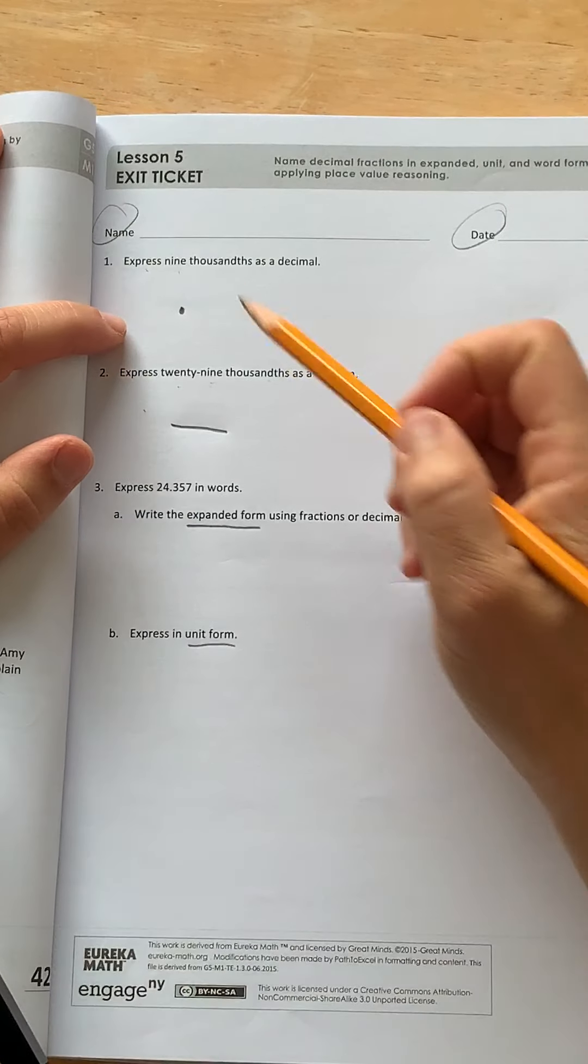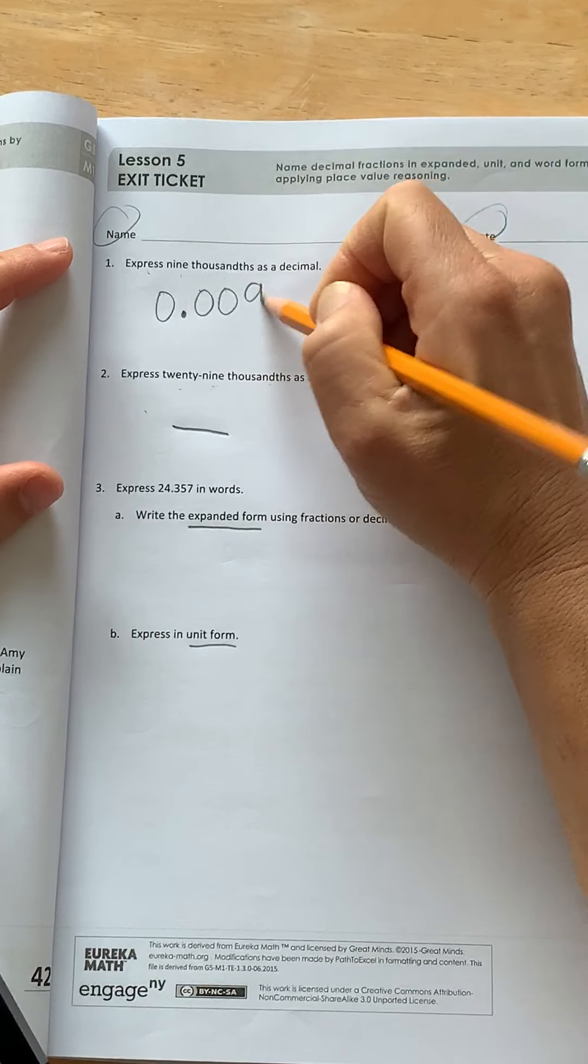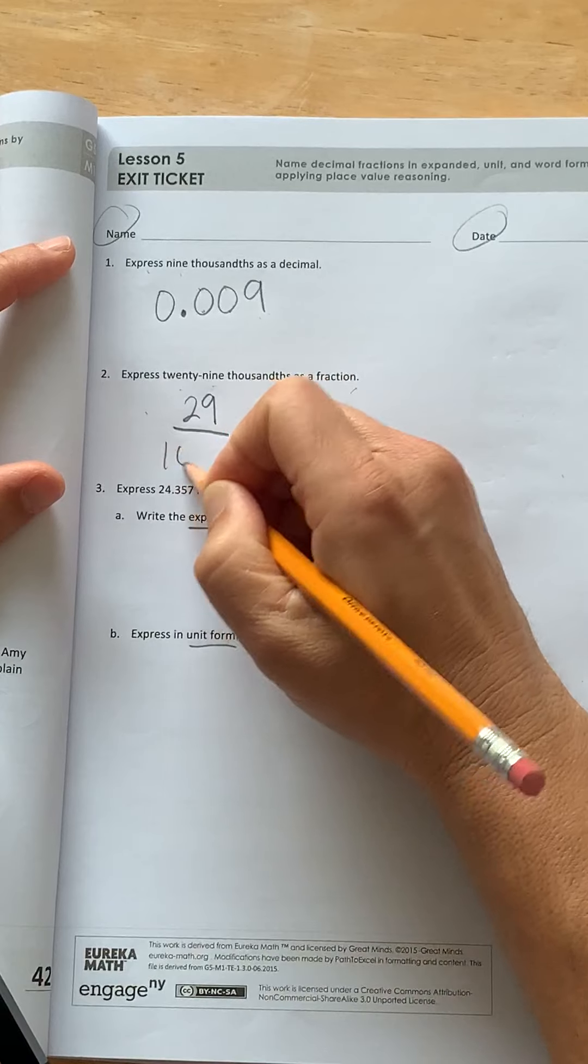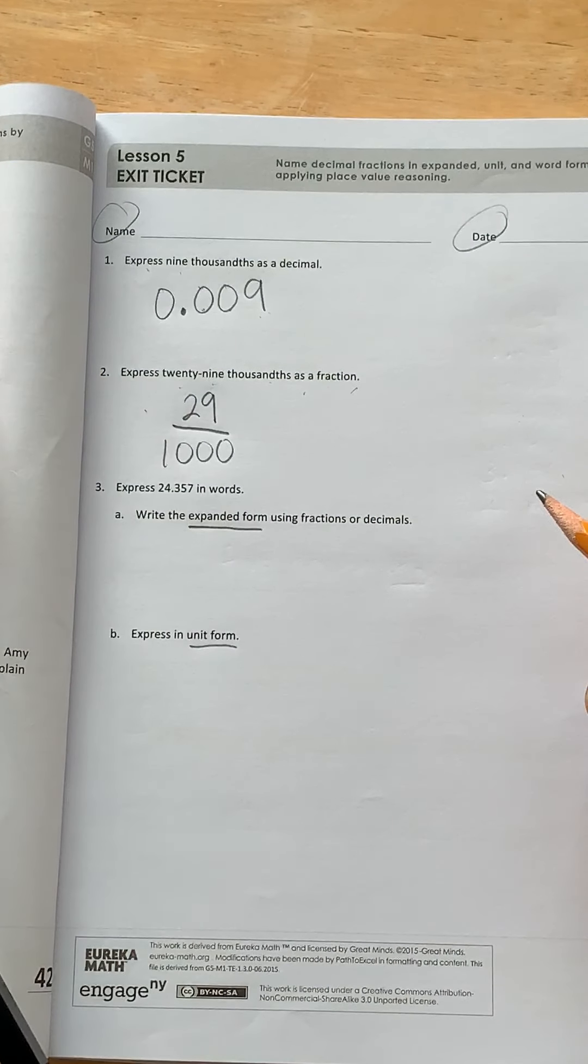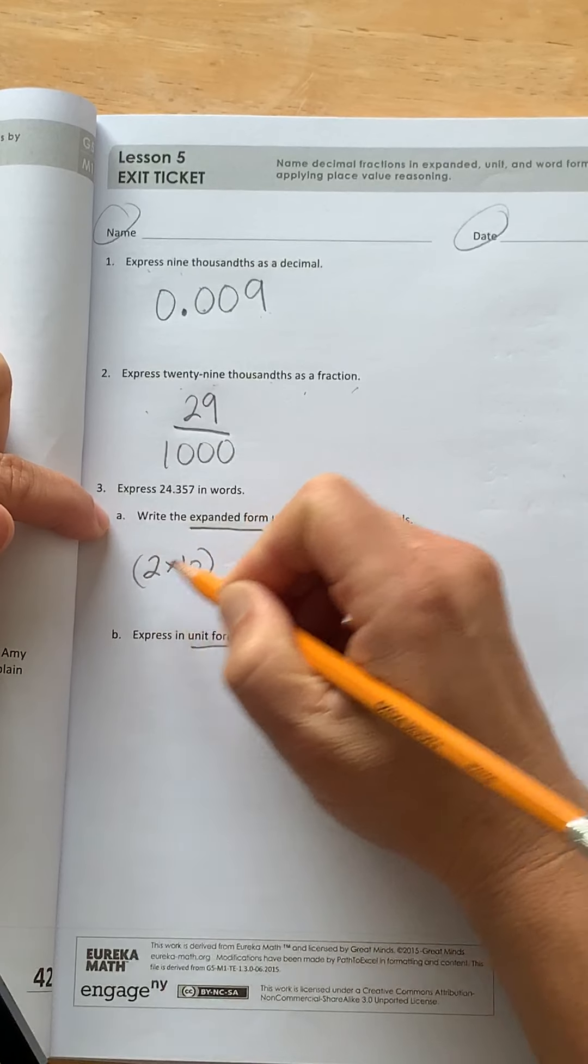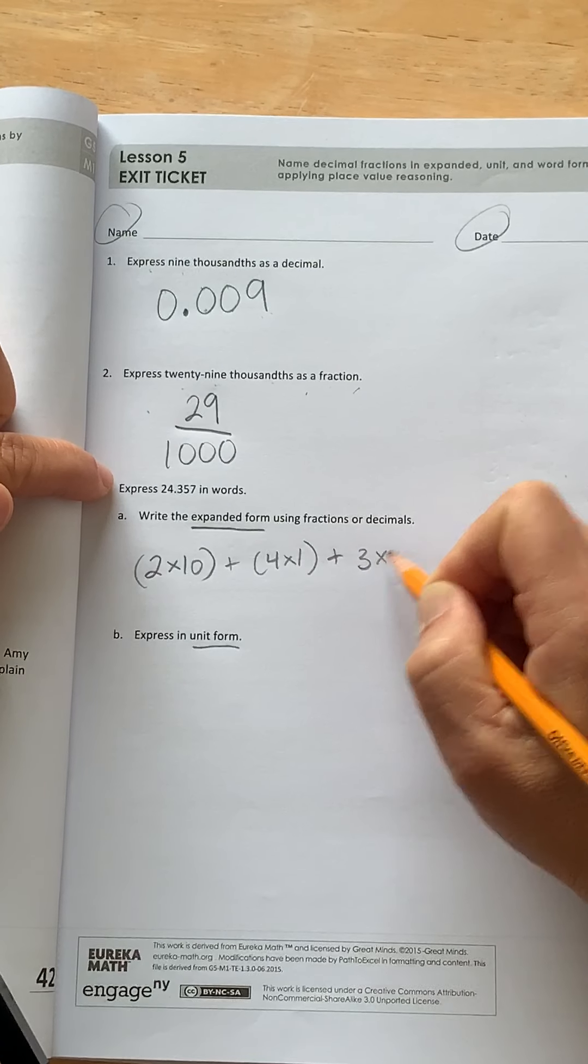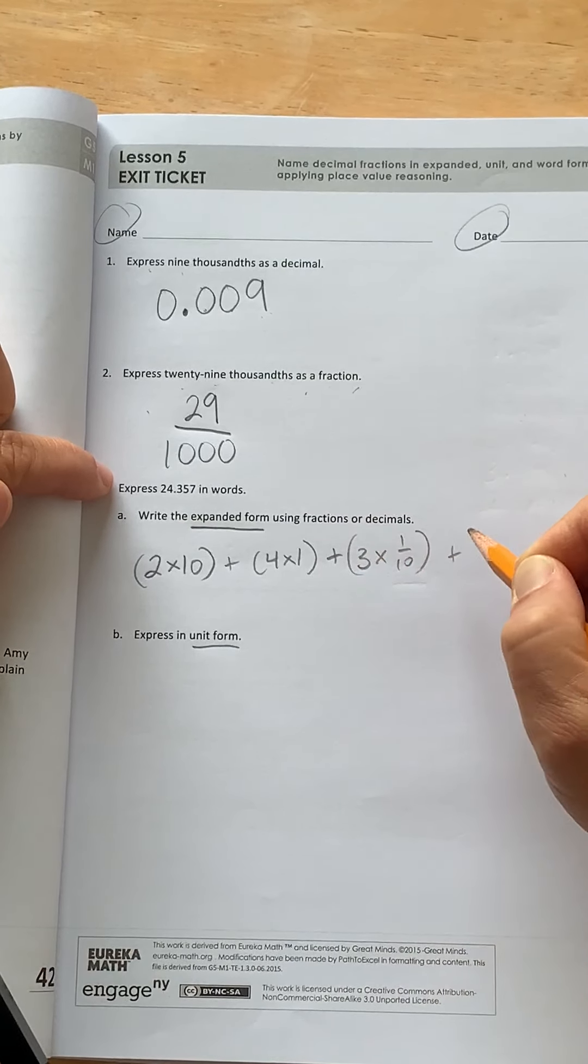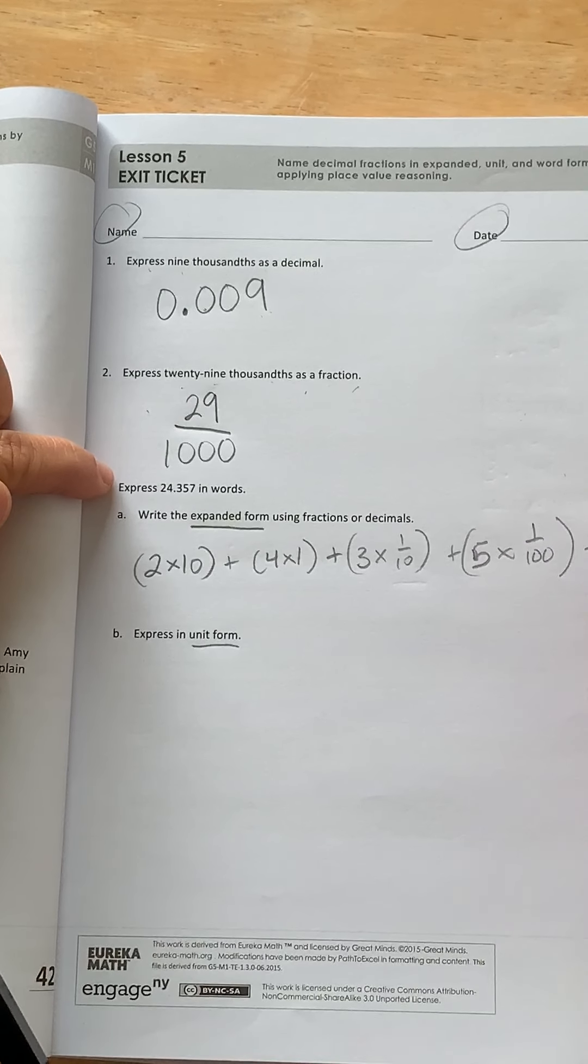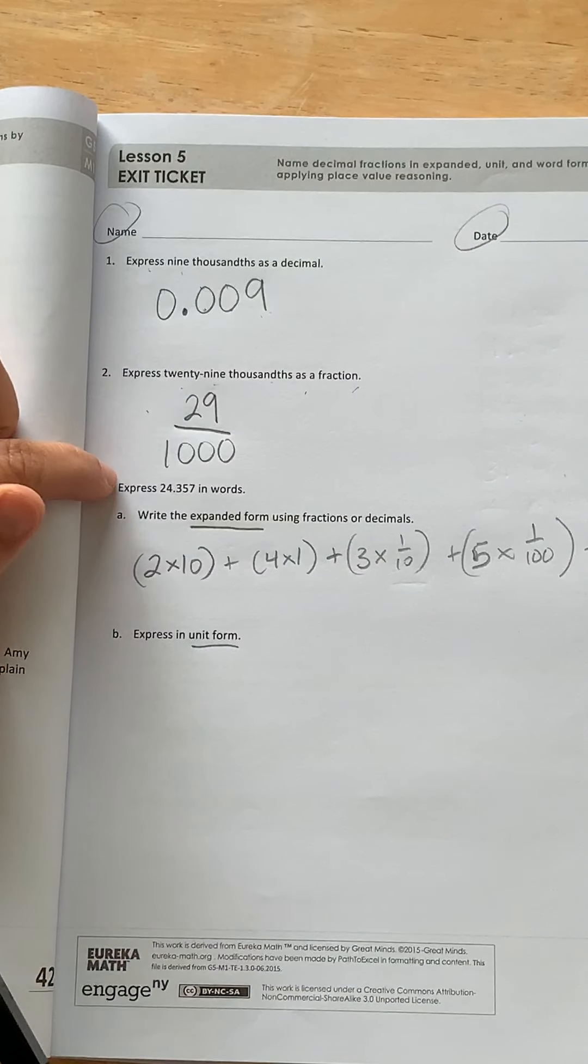Okay, ready to do some of these answers. So number one should be 0.009. Number two should be 29/1000. And I'll go ahead and do A with you. So I would write the two as in two times 10, plus 4 times 1, plus 3 times 1 tenth, plus 5 times 1 hundredth, plus 7 times 1 thousandth. Okay, let's go on to the homework.